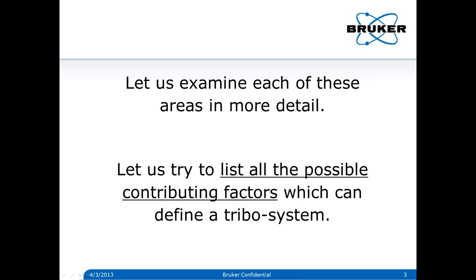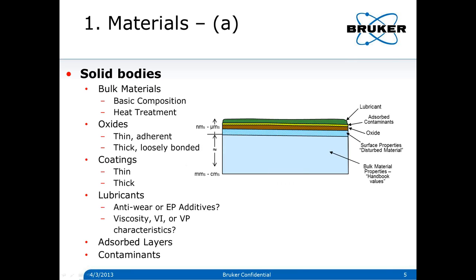The good news is we won't have to address all of these, but if we consider them, some are more important than others. In certain tests, if you miss one, you could be in trouble getting the wrong answer. Starting with materials — we'll talk about solid bodies or monolithic bodies. The solid bodies really have a number of things on their surfaces: oxides, coatings, lubricants, absorbed layers, and contaminants. We must consider each of these, because for example, thin coatings are better characterized by a scratch or nano-indentation test, and thick coatings like a hard-facing by maybe a rubbing or abrasion test.